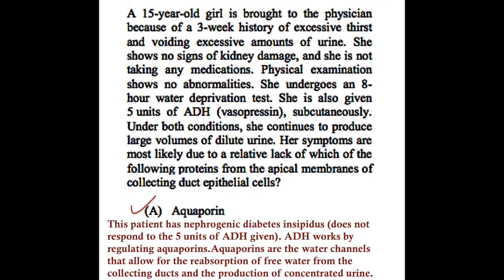Differentiation of the two types can be done by administration of desmopressin, a synthetic ADH analog. In central diabetes insipidus, the body will respond to desmopressin because the problem is a lack of ADH and not a problem with the receptor pathway. In this question, the patient does not respond to the ADH given, hence the patient does not have central diabetes insipidus.